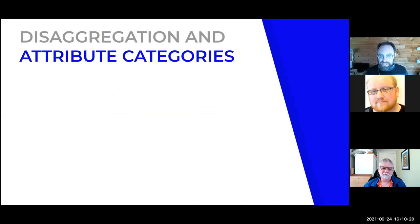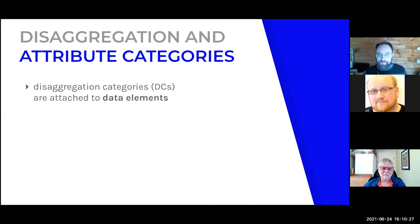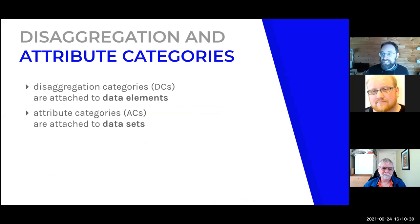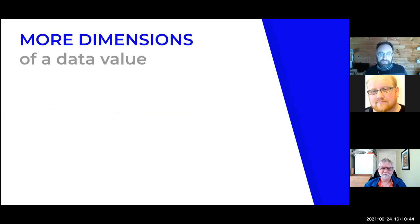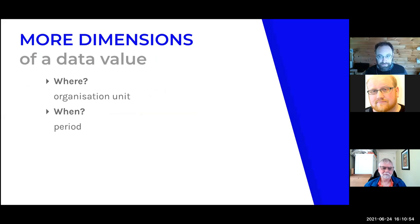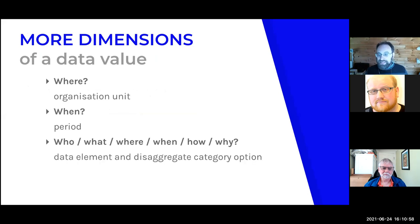We've talked about disaggregation categories, which are categories applied to data elements. Now we'll talk about attribute categories, which are attached to data sets. Data elements are atomic data values on a form, while a data set can be thought of as an entire form, and those can be disaggregated as well. Data elements and disaggregation category options aren't just 'what' — they can also represent who, how, why, and even additional dimensions of where and when.